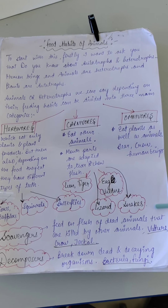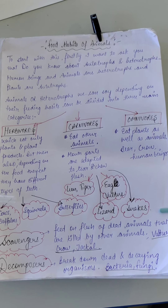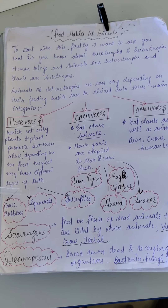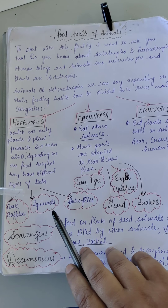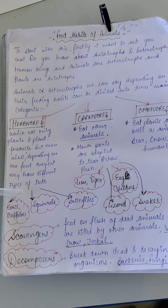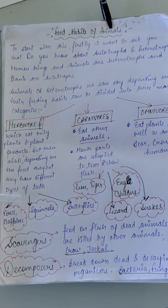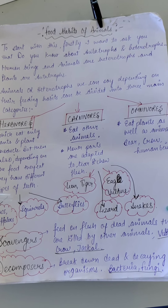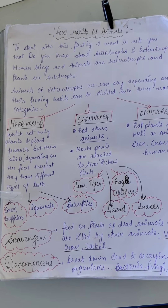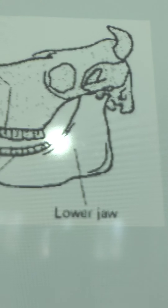Herbivores are organisms which eat plants only — plants or plant products. But all herbivores are not the same. Consider a cow, buffalo, squirrel, and butterfly — these are all herbivores, but they are different from each other. They all have different types of feeding habits. What they eat is different, and accordingly their mouth parts and the type of teeth they have are different.